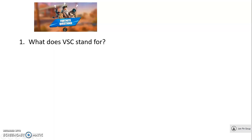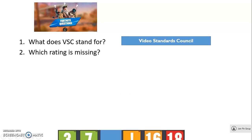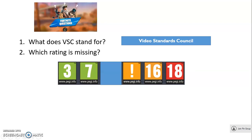Very quick questions now — I'm going to read a question and then give you about 10 seconds to jot down your answer. You should be able to find the answer in your notes, or if you want to skip back through the video, that's fine. There are three questions. Question one: what does VSC stand for? The answer is Video Standards Council. Question two: which rating is missing? You've got five ratings — there should be six. Which rating is missing? The answer is 12.